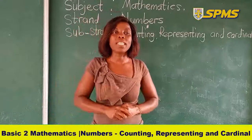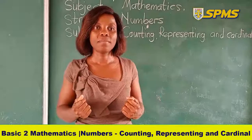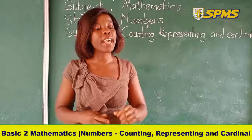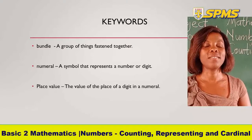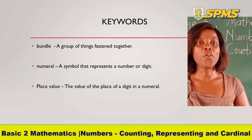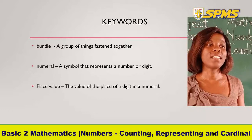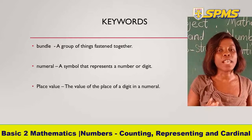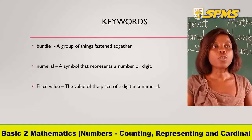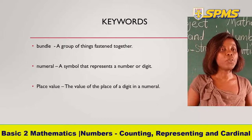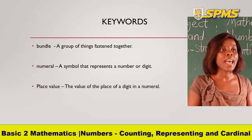Before we start with today's lesson, there are certain keywords you should be able to understand. Our first keyword for today is BUNDLE. Let's all spell BUNDLE: B-U-N-D-L-E. BUNDLE is a group of things fastened together or put together as one. You are also going to meet the word NUMERALS. NUMERALS is a symbol that represents a number or a digit.